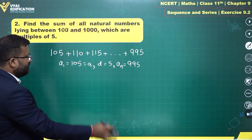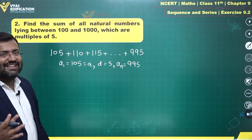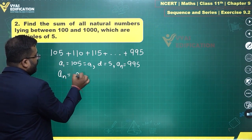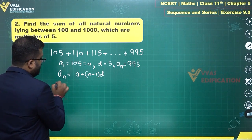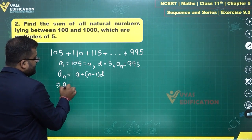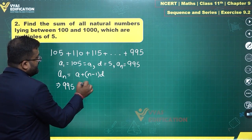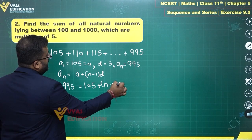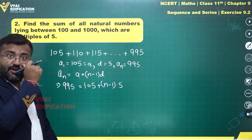Can you find N? Because for finding this sum I need N. AN is equal to A plus N minus 1 times D. Let's apply this. AN is 995, A is 105 plus N minus 1 times common difference 5. And I can get the value of N from here.